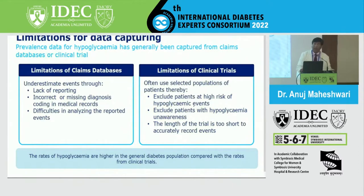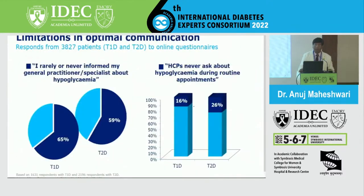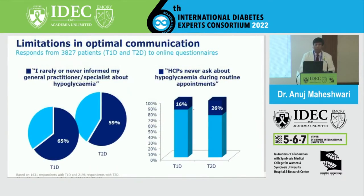As far as clinical trials are concerned, hypoglycemia reporting is always under-reported because they exclude patients at high risk of hypoglycemic events, exclude patients with hypoglycemia unawareness, and trial duration is too short to accurately record events. The rates of hypoglycemia are higher in the general diabetes population compared with rates from clinical trials, so real-world evidence is more important regarding hypoglycemia.